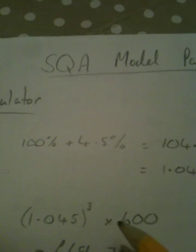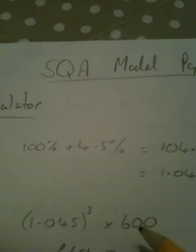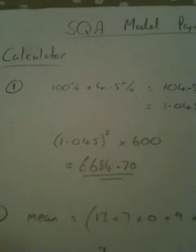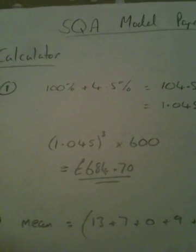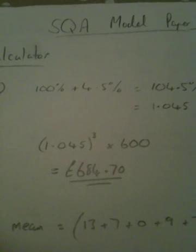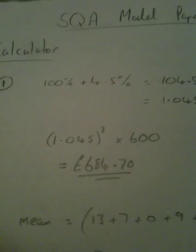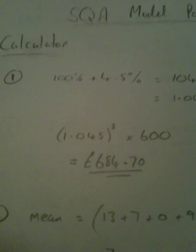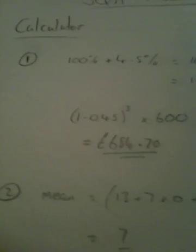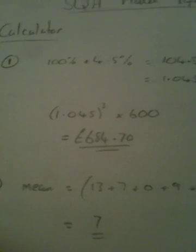Question number two is a standard deviation question. We are given seven values and we're asked to find the mean and the standard deviation. So the mean is the sum of the values—add all the values up—divided by how many numbers we've got.